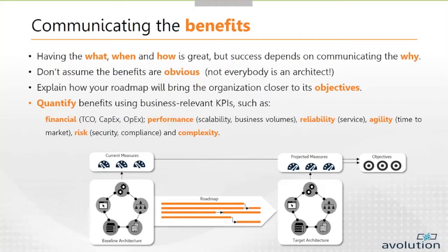For example, if we have a picture describing our current application state with all its integrations — a hairball spaghetti architecture — and then we have a to-be architecture with a nice rationalised messaging bus or big data lake, as architects we will instinctively say this is better. But we have to bear in mind that not all our stakeholders are architects and the difference may not be as obvious to them. Fundamentally, we need to be able to articulate the benefits of road maps in business-relevant KPIs or key performance indicators, and demonstrate how these move us closer to our organisation's objectives.